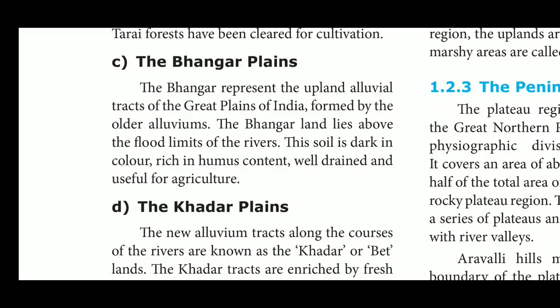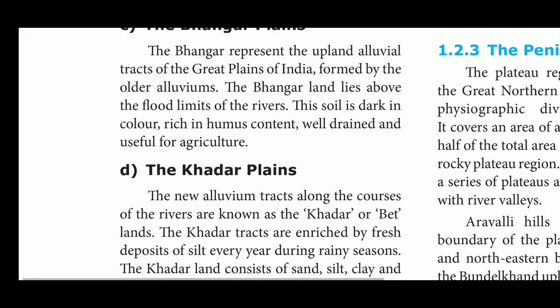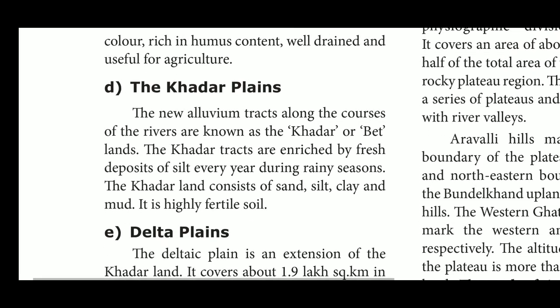The fourth type is the Khadar Plains, which represent the new alluvium. These alluvium tracts along the courses of the rivers are known as Khadar or wetlands. The Khadar tracts are enriched by fresh deposits of silt every year during the rainy season. The Khadar land consists of sand, silt, clay, and mud. It is highly fertile soil, rich in micro and macronutrients.